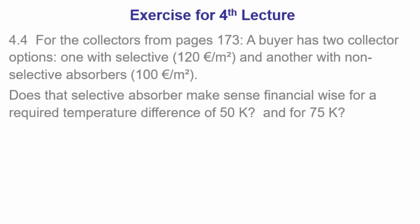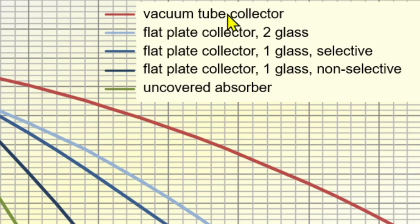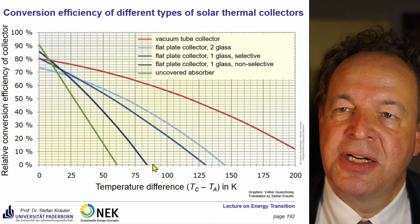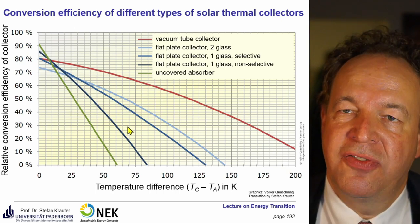Question four: from the collector graph, we simulate a buyer with two options — a selective absorber costing 120 EUR per square meter, and a cheaper non-selective one at 100 EUR per square meter. The question is whether the selective absorber makes financial sense for a temperature difference of 50 Kelvin or 75 Kelvin. Looking at the graph, the middle blue line is a single-glass collector with a selective absorber, and the darker blue is with a non-selective absorber. With the selective absorber, you achieve higher temperature and higher conversion efficiency.